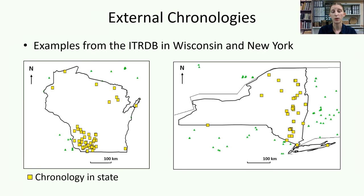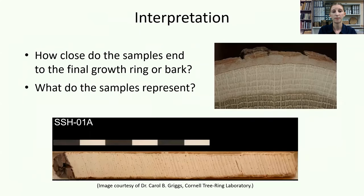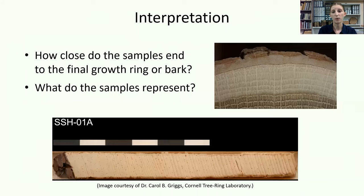Statistical calculations, such as the correlation coefficient r, are used to gauge potential matches. Supplied with a calendar-dated master chronology, a researcher can then apply the dates for the master component samples to research questions and form interpretations. If the samples end with bark or a wany edge with only the bark missing, they can speak to tree-felling dates. It is also important to consider what the samples represent — for example, dates from different areas of a house might indicate multiple building or renovation episodes, or the context might suggest the wood was reused.